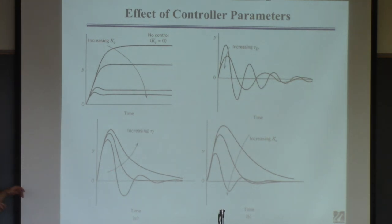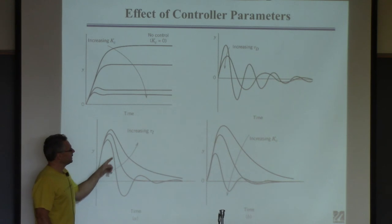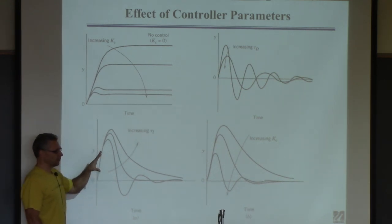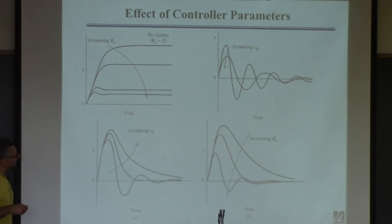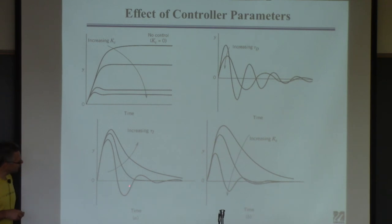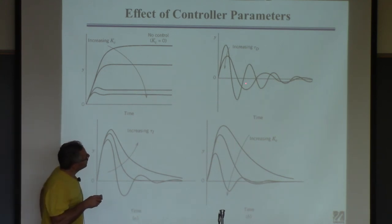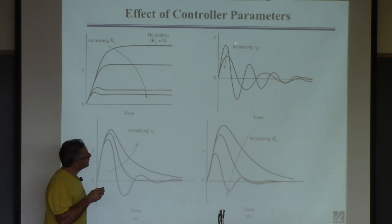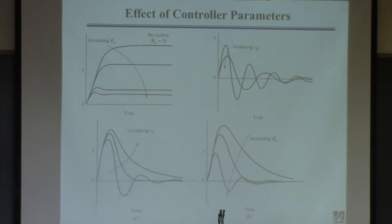For the derivative term: increasing τD can damp out oscillations and make the controller more stable — the bigger the derivative term, the more stable the controller. That's true, provided the signal is clean and not noisy.